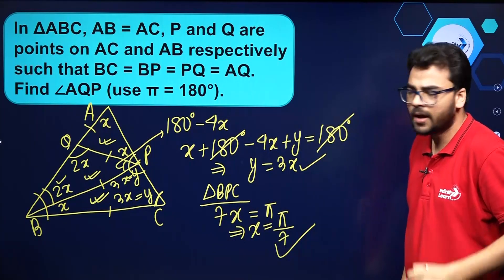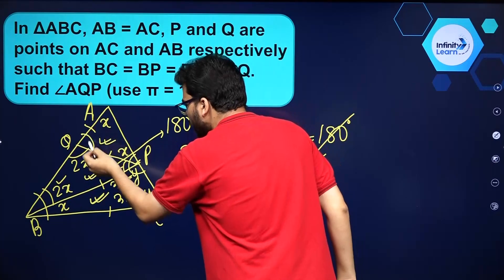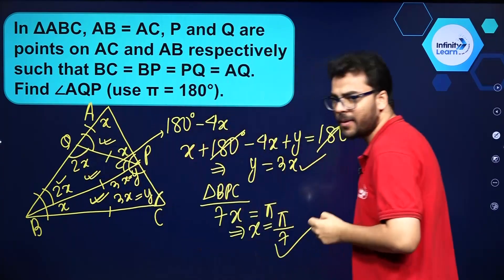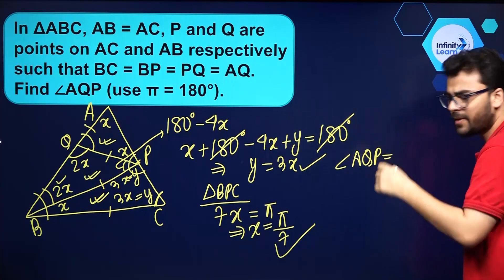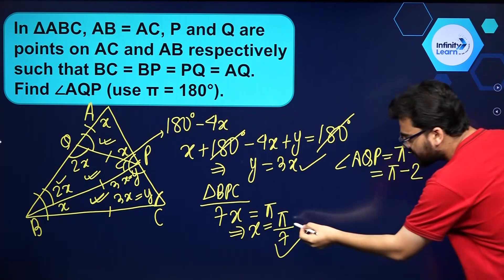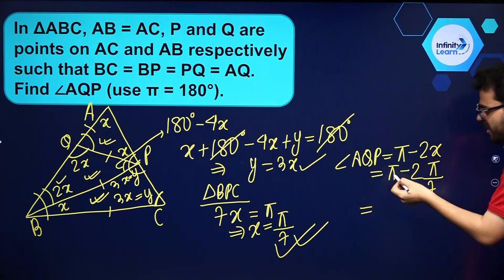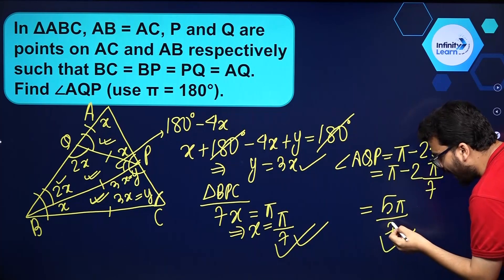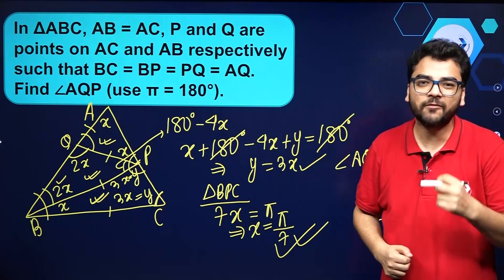Now we have to find angle AQP. Angle AQP and 2x form a linear pair, so angle AQP equals 180 minus 2x, or pi minus 2x. Substituting x equals pi by 7: angle AQP equals pi minus 2 times pi by 7, which gives 5 pi by 7. Therefore, the measurement of angle AQP in terms of pi is 5 pi by 7.